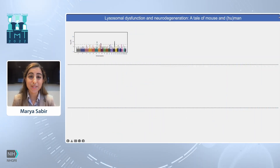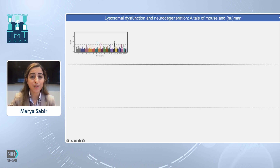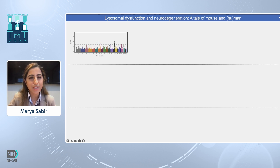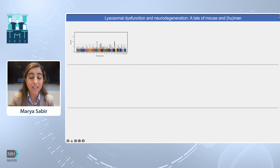Hi, my name is Maria Sabir, and I'm a graduate student at the National Institutes of Health. The growing prevalence of neurodegenerative diseases has positioned these disorders as a leading public health concern. However, despite advancements in sequencing technologies and computational tools, much of the genetic risk underlying neurodegeneration remains to be understood.